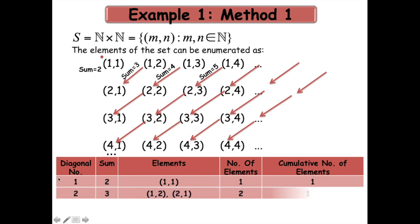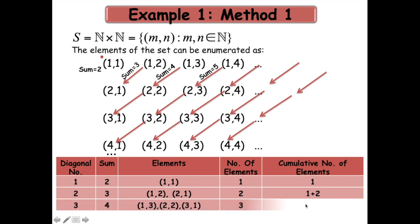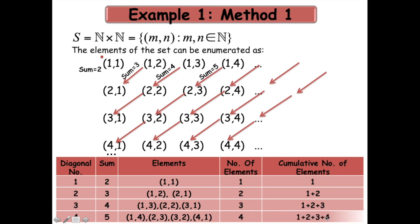The number of elements is 1 and the cumulative number of elements is 1. On the second diagonal the sum of components is 3; there are two elements (1,2) and (2,1), and the cumulative number of elements is 1 + 2. Along the next diagonal the sum is 4, there are 3 elements, and the cumulative number is 1 + 2 + 3. For the fourth diagonal the cumulative count is 1 + 2 + 3 + 4.